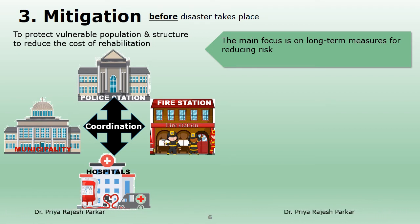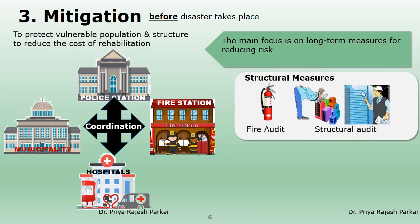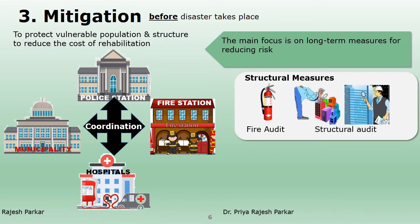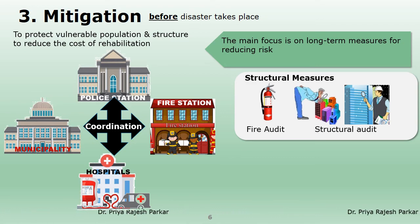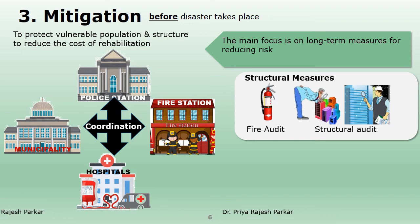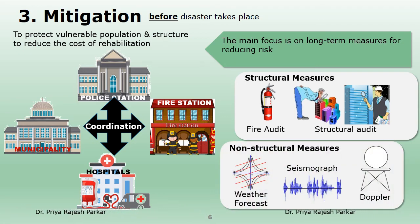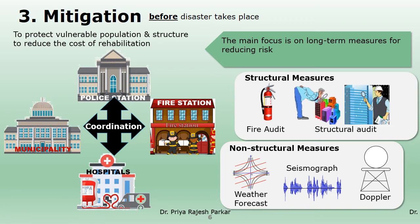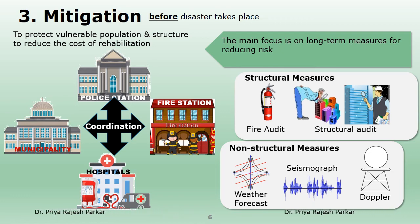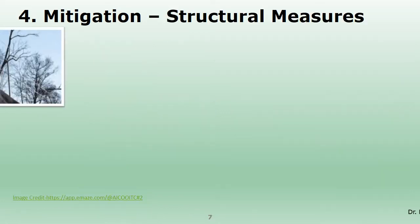Two types of mitigation measures are adopted: structural and non-structural. Structural measures include ensuring quality physical constructions, such as earthquake-resistant houses, to avoid casualties. This also includes fire audits, structural audits of schools and residential buildings, construction of dams, flood levees, and ocean wave barriers. Non-structural measures include building codes, land use planning, enforcement of laws, research and assessment procedures to reduce disaster impact, and developing information resource systems and public awareness systems.